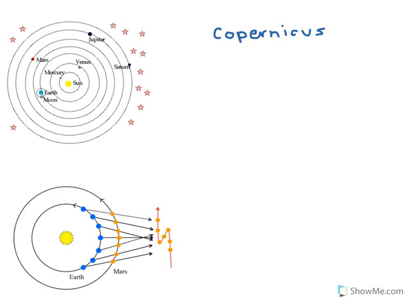He said: what if instead of Earth being at the center, the Sun was at the center, and the planets, including the Earth, orbit around the Sun? Sun-centered would be heliocentric. Helios is Greek for the Sun, so heliocentric means Sun-centered.